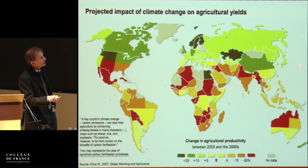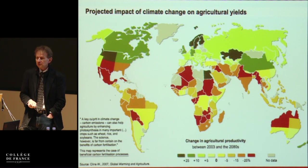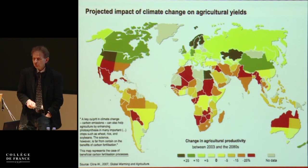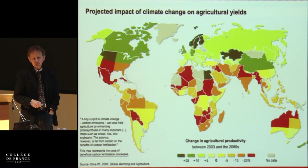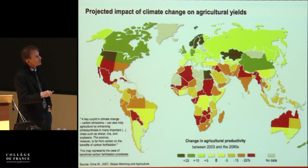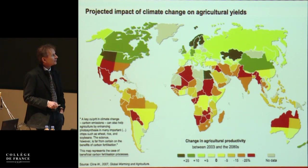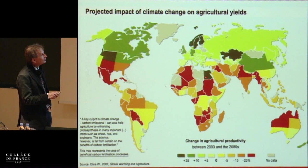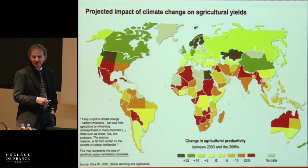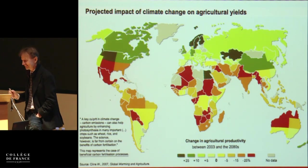Especially in this region here, we will have increased temperatures and less water, so agricultural production will decrease significantly. Don't ask me why Egypt is different — I tried to find out but I don't know.